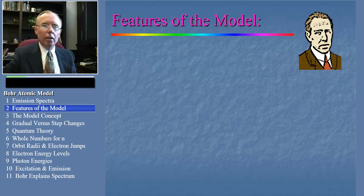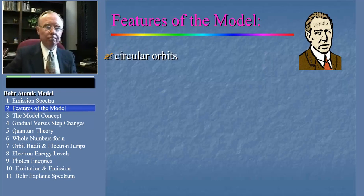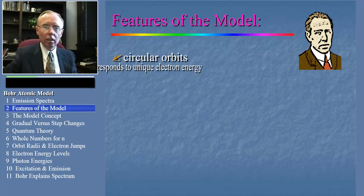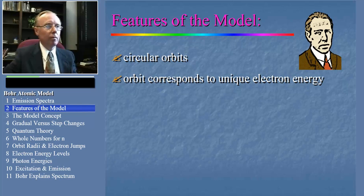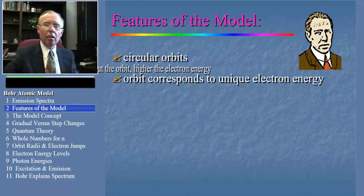First of all, Bohr postulated that the electrons circle the nucleus in circular orbits. Each orbit corresponds to a unique electron energy. The further out the orbit, the higher the energy.